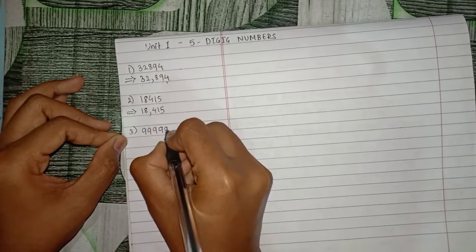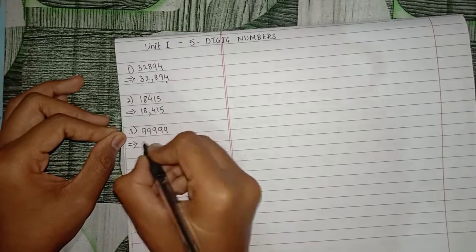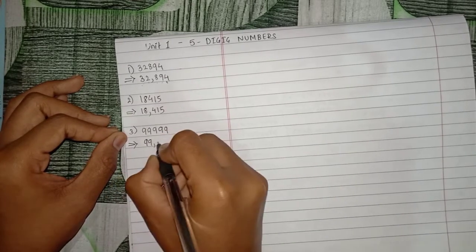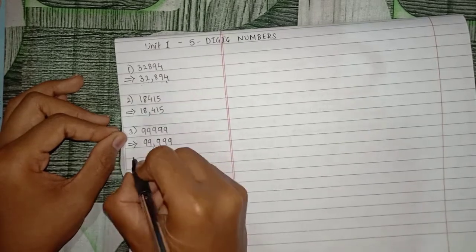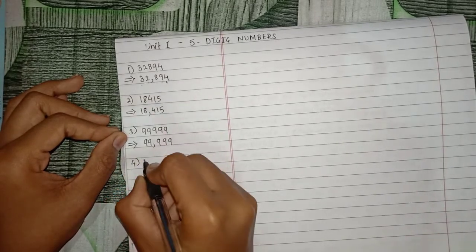Similarly with the third question: 99999. Ninety-nine thousand comma nine hundred and ninety-nine.